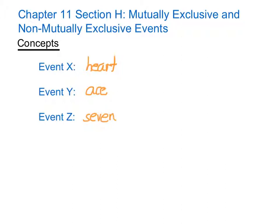Now notice that Event X and Event Y have a common card, the ace of hearts. Also notice that Event X and Event Z have a common card, the 7 of hearts. But Event Y and Event Z have no common card, for I cannot have an ace and a 7 in the same card.